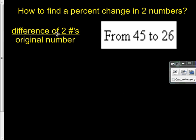First off, find the difference between these two numbers, 45 and 26. So 45 minus 26 is the difference of the two numbers, and we're going to divide it by the original number.